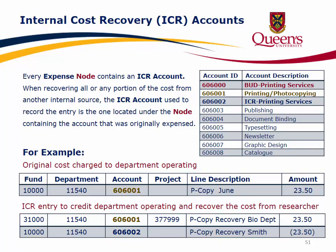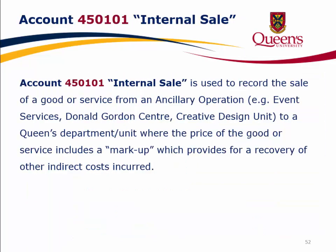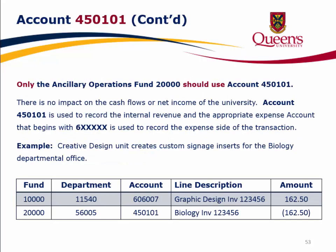For example, suppose your monthly departmental photocopying is charged to your operating fund 10,000, account 606001. The ICR entry to credit the department's operating fund back and recover the cost from a researcher would be a debit to the researcher's project using the same account 606001, and a credit to your operating fund 10,000 using account 606002. Account 450101 (internal sale) is used to record the sale of a good or service from an ancillary operation — like Event Services, Donald Gordon Center, or Creative Design Unit — to a Queen's department, where the price includes a markup for recovery of indirect costs.